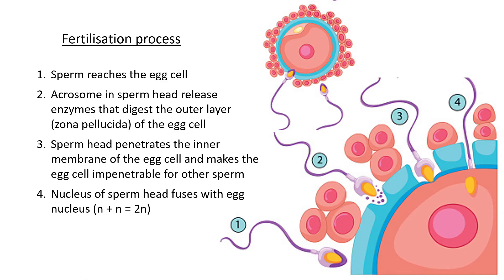Now the fertilization process in some detail. Here we have an egg cell with sperm cells that want to fertilize it. There are four main steps. Step one: the sperm reaches the egg cell. Step two: the acrosome and the sperm head are released — the acrosome has enzymes that digest the outer layer of the egg cell, known as the zona pellucida, because the sperm cell can't get in otherwise. The enzymes eat away at this layer.